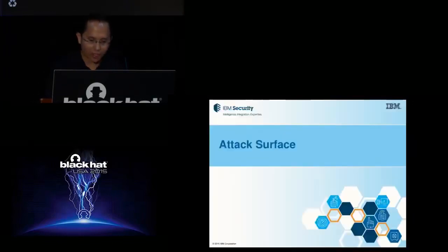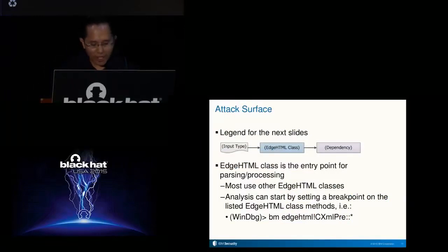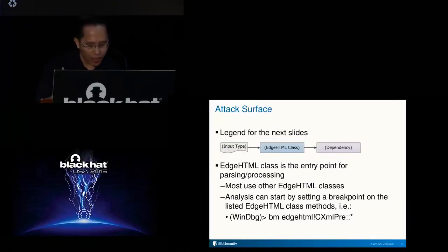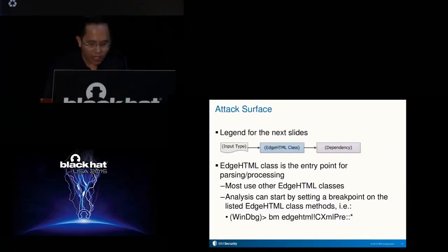So with that, let's move on to the discussion of EdgeHTML's attack surface. In the next slide, you see a diagram: the left side describes the type of input, the center names the EdgeHTML class that processes the input, and the rightmost side is the library used by the EdgeHTML class to perform the actual parsing. Note that the listed EdgeHTML classes are the entry point classes — most of them use other EdgeHTML classes for processing. You can use them as a starting point when analyzing how EdgeHTML handles certain types of input.